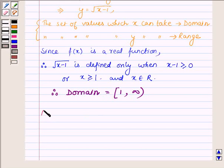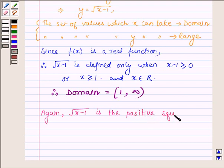And again since root over x minus 1 is the positive square root of x minus 1 and x is greater than or equal to 1, this implies that the function y is greater than or equal to 0.